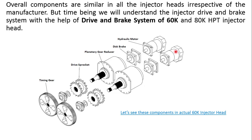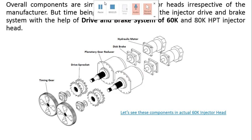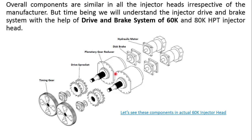The hydraulic motors generate rotational energy by converting the hydraulic energy of the hydraulic oil. This rotational energy is transferred to the planetary gear reducer assembly via the drive shaft. The planetary gear reducer reduces the speed of the drive shaft and converts that speed into torque. The output is then provided to the drive sprockets, which drive the chain assembly.